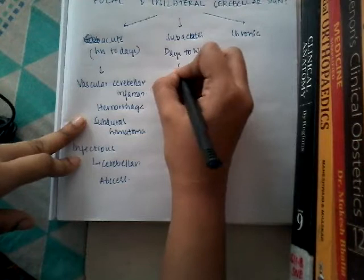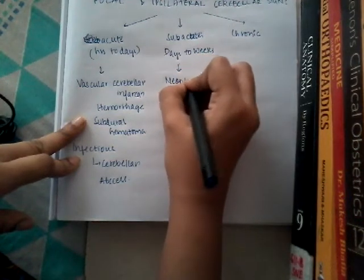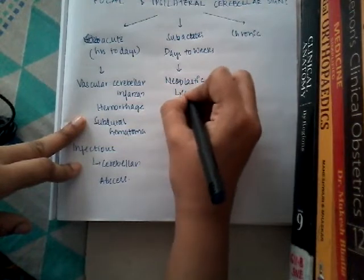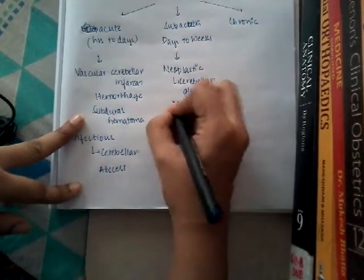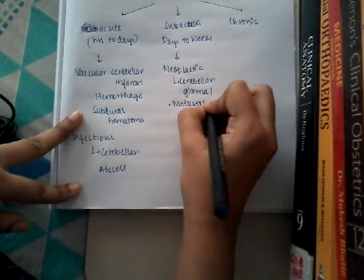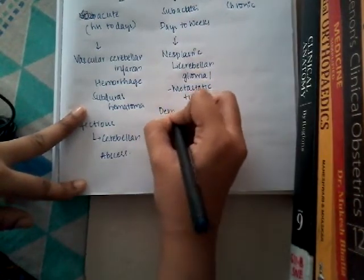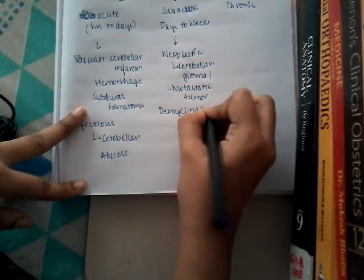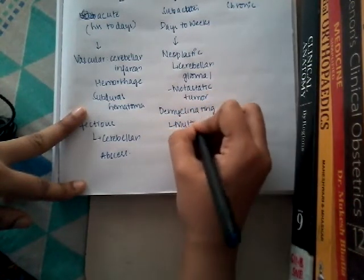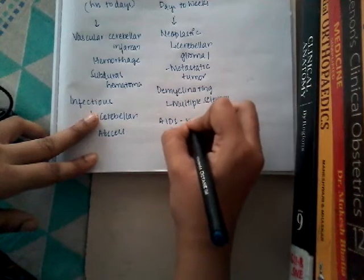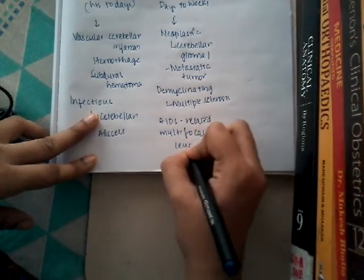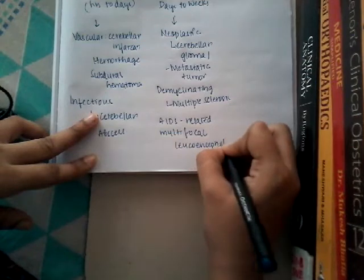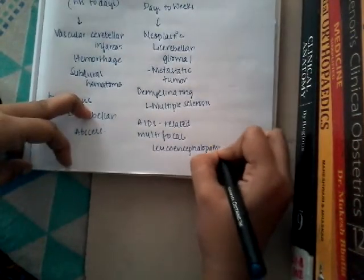The subacute focal cerebellar ataxia causes also include neoplastic conditions such as cerebellar glioma or metastatic tumor. Demyelinating disorders such as multiple sclerosis cause focal cerebellar signs, as does AIDS-related multifocal leukoencephalopathy and lymphoma.